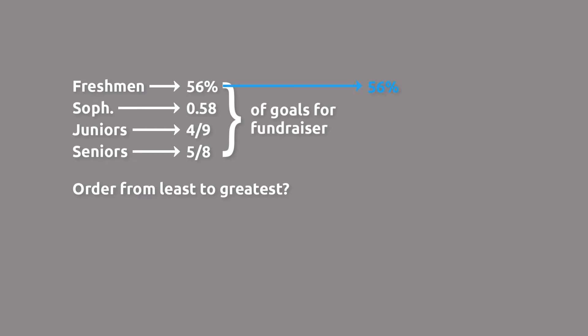56% — we just move the decimal two places to the left to give us 0.56. And 0.58, we already have as a decimal, so it equals 0.58.